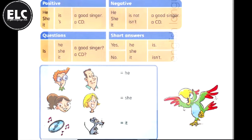It's a CD. It's a CD. Negative: he is not a good singer. With negative expressions, he is not a good singer, she is not a good singer. You can also use the shortcut and say he isn't a good singer. Isn't is 'is not' combined together - isn't, isn't.